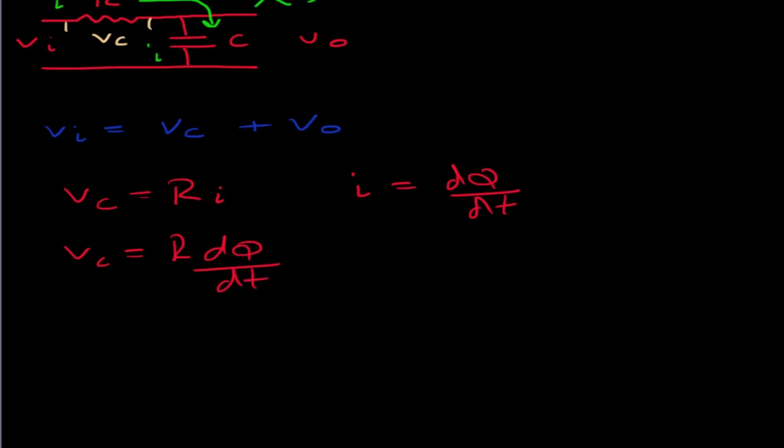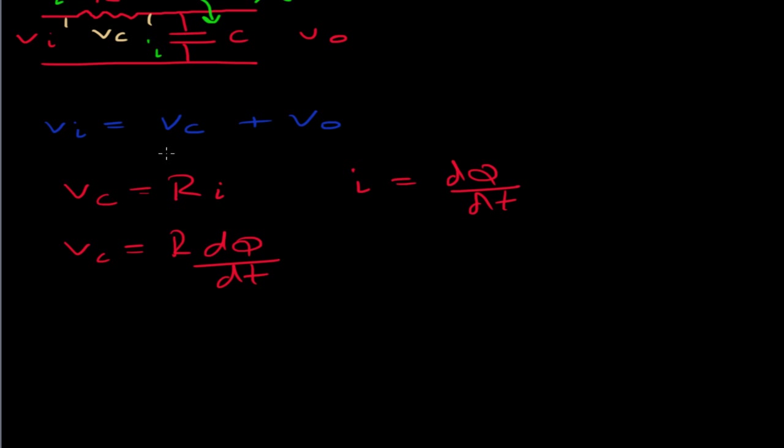Now, what about V0? Well, V0, I know from the capacitance law, at any instant in time, the voltage across that is the ratio of the charge that's accumulated in the capacitor divided by the capacitance. So, these are just basic relationships that I'm using here, nothing special.